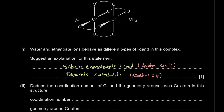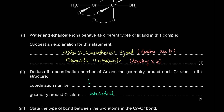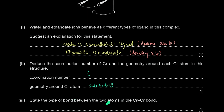Deduce the coordination number of chromium and the geometry around each chromium atom. Each chromium is making six bonds, so the coordination number is six. When you have a coordination number of six, the geometry is octahedral — so each chromium atom here is octahedral.